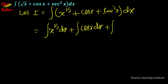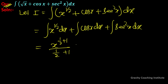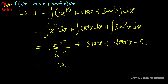Applying the power rule to x to the power 1 upon 2 gives x to the power 3 upon 2 multiplied by 2 upon 3. The integration of cos x is sin x, and the integration of sec square x is tan x plus c.